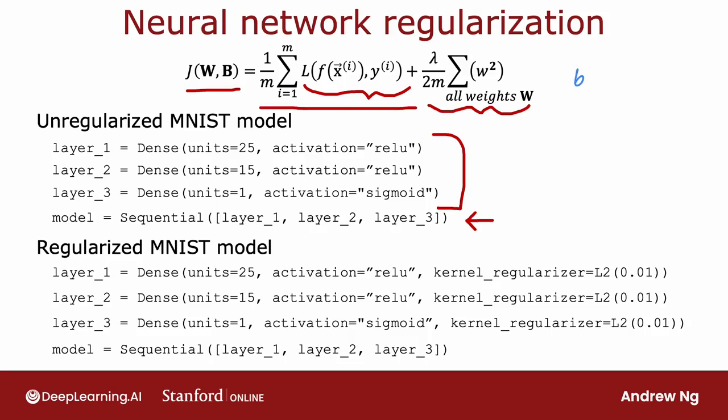If you want to add regularization, then you would just add this extra term, kernel_regularizer equals L2 and then 0.01, where that's the value of lambda. TensorFlow actually lets you choose different values of lambda for different layers, although for simplicity, you can choose the same value of lambda for all the weights in all of the different layers as follows. And then this will allow you to implement regularization in your neural network.